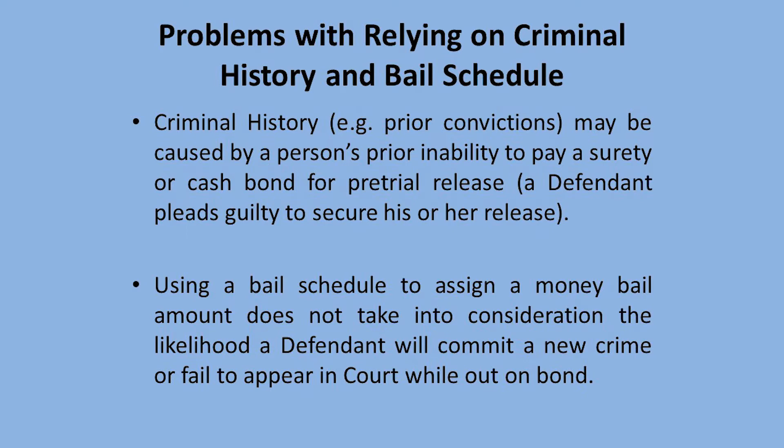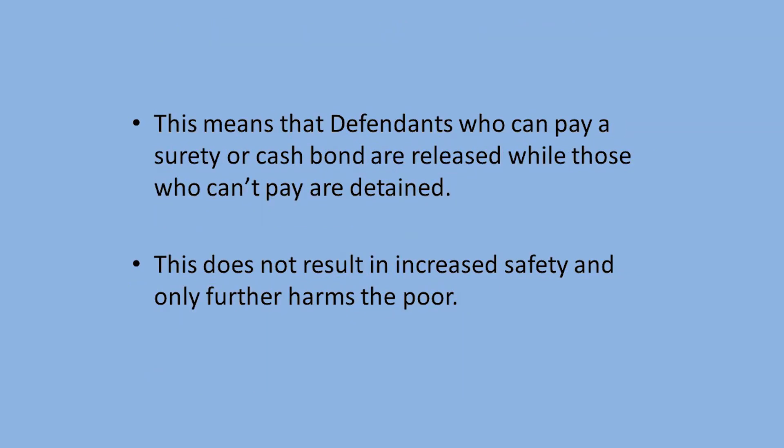A person may get multiple convictions for prior misdemeanors that aren't very serious or related to the safety of the community, and really have nothing to do with whether they will appear in court or commit a new offense, because in reality they've never been given that opportunity. So they have a criminal history that inflates their scores but is not reflective of what will actually happen if they are released. When using a bail schedule to assign a money bail amount, it also does not take into consideration whether a person will fail to appear or commit a new offense.